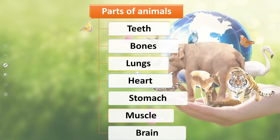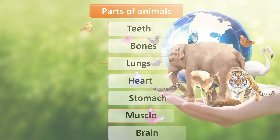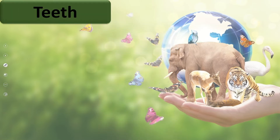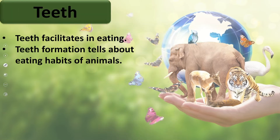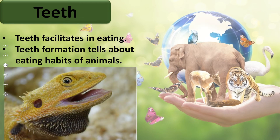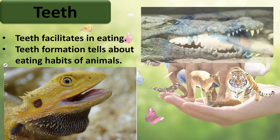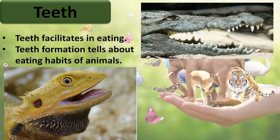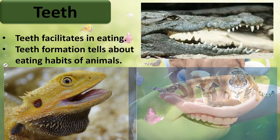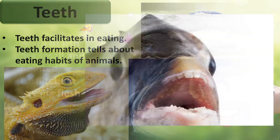Parts of animals include teeth, bones, lungs, heart, stomach, muscle, and brain. Today we are only talking about teeth. Teeth facilitate animals in eating. The formation of teeth tells about the eating habits of the animals — different animals ki teeth ki formation hoti hai, wo hume unki eating habits ke baare mein batati hai.